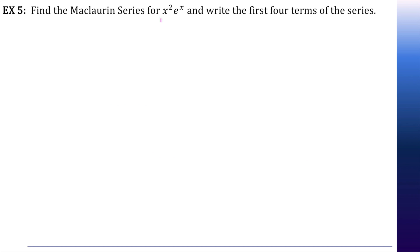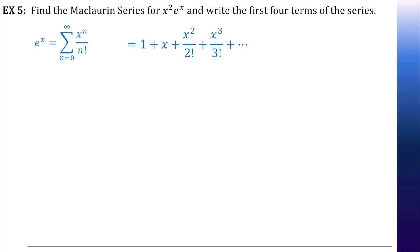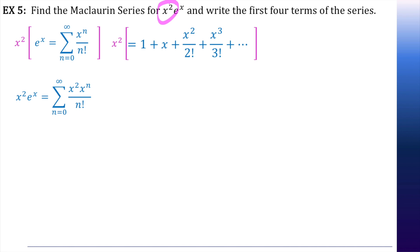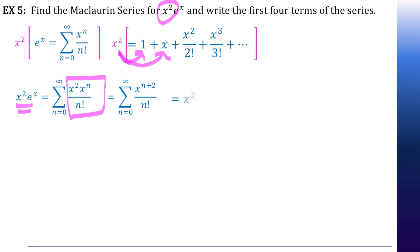Let's do x squared times e to the x. Again, we know what e to the x is. If we want x squared to be multiplied by that, we just multiply everything by x squared. So x squared e to the x is the infinite series of x squared times x to the n over n factorial. We can clean that up to get x to the n plus 2. The expanded version is just that x squared distributed through all the terms.